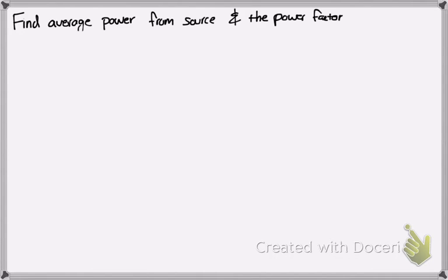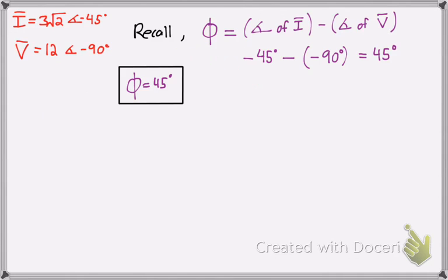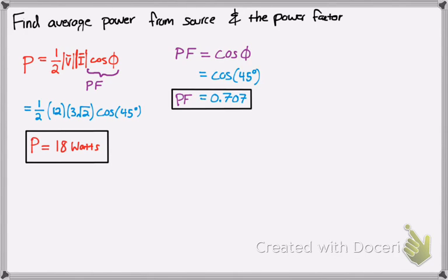We were asked to find the average power from the source and the power factor. The formula for average power is one-half times the magnitude of V times the magnitude of I times cosine phi. The power factor is cosine phi — with phi equal to 45 degrees, the power factor is 0.707. The magnitudes are 12 and 3√2 respectively, so average power equals one-half times 12 times 3√2 times cosine 45 degrees, which gives 18 watts. Hope it helped, and happy studying.